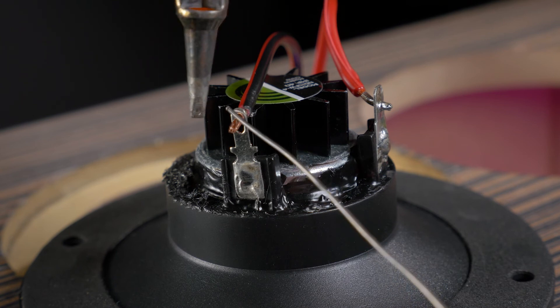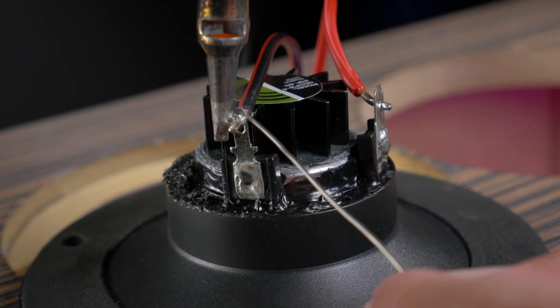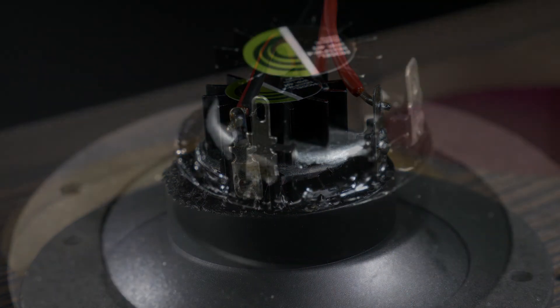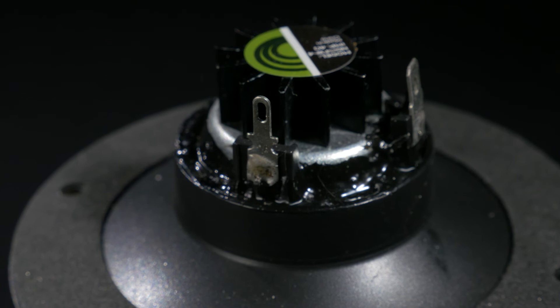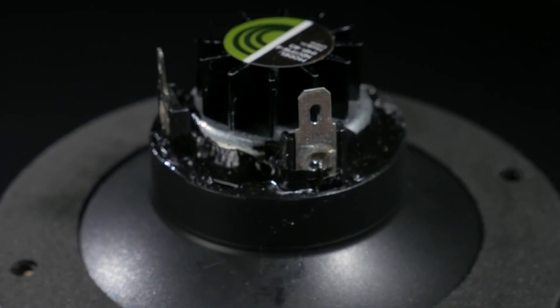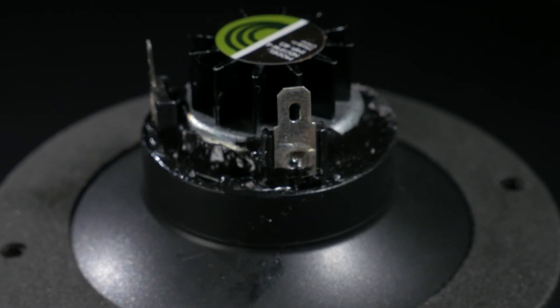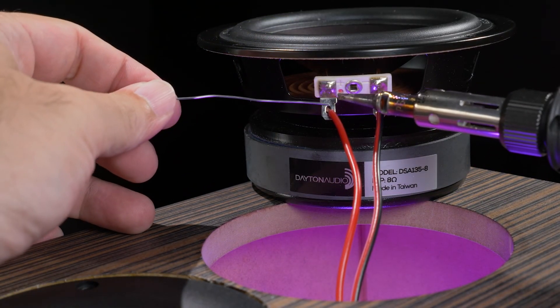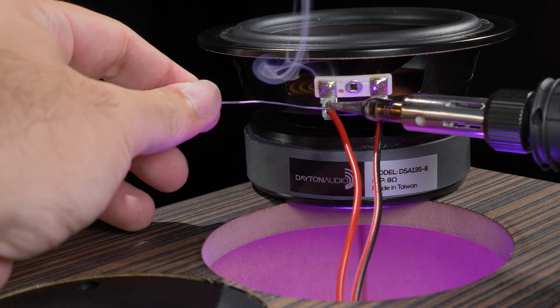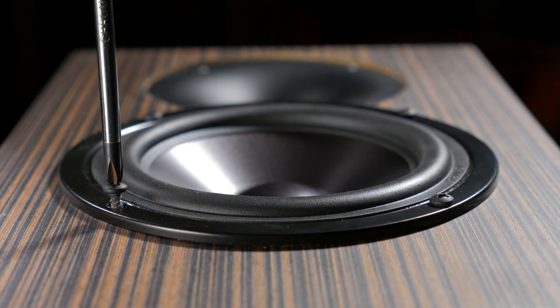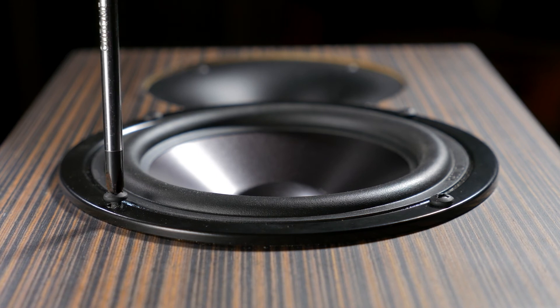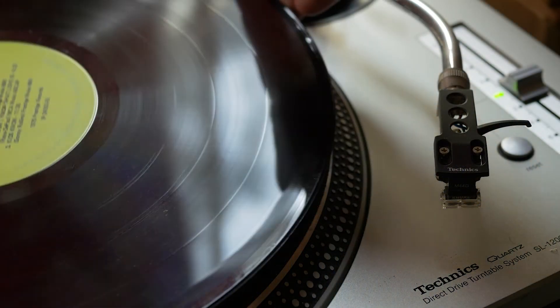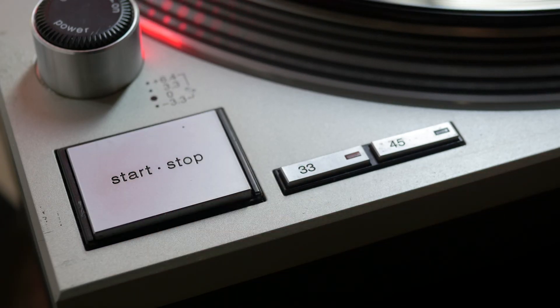Now all we have to do is solder in the crossover to our speaker terminals. On the tweeter, there's no clear markings on which side is positive or negative. Just know that the negative is going to be the smaller terminal and the positive will be a large terminal. For the woofer, it is a lot easier to figure out which side is positive or negative. The positive side has a red dot right next to it. After we have soldered in our terminals, we just screw in our drivers and that is it. We have completed our own pair of DIY speakers.